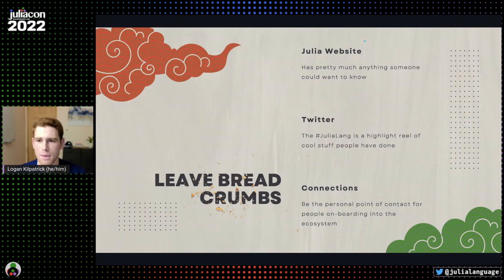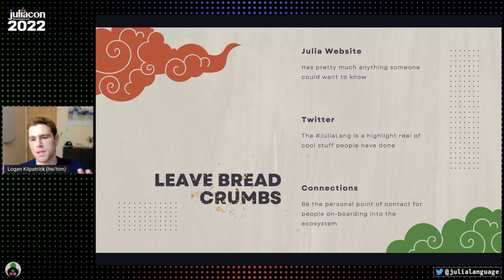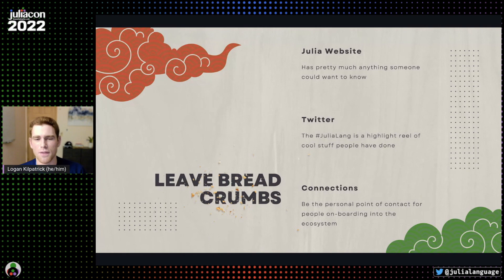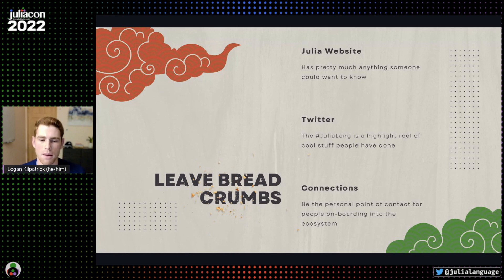One of the last things to talk about is the idea of leaving breadcrumbs, which is really helpful to let folks naturally trickle back into the ecosystem. Whether it's reaching out to folks after the fact and saying 'Hey, if you have questions, reach out to me,' or telling them to check out the hashtag JuliaLang on Twitter to see what real users are talking about — basically giving folks different entry points into the community is a really important part of any advocacy you're doing, and something I always try to do when giving presentations.